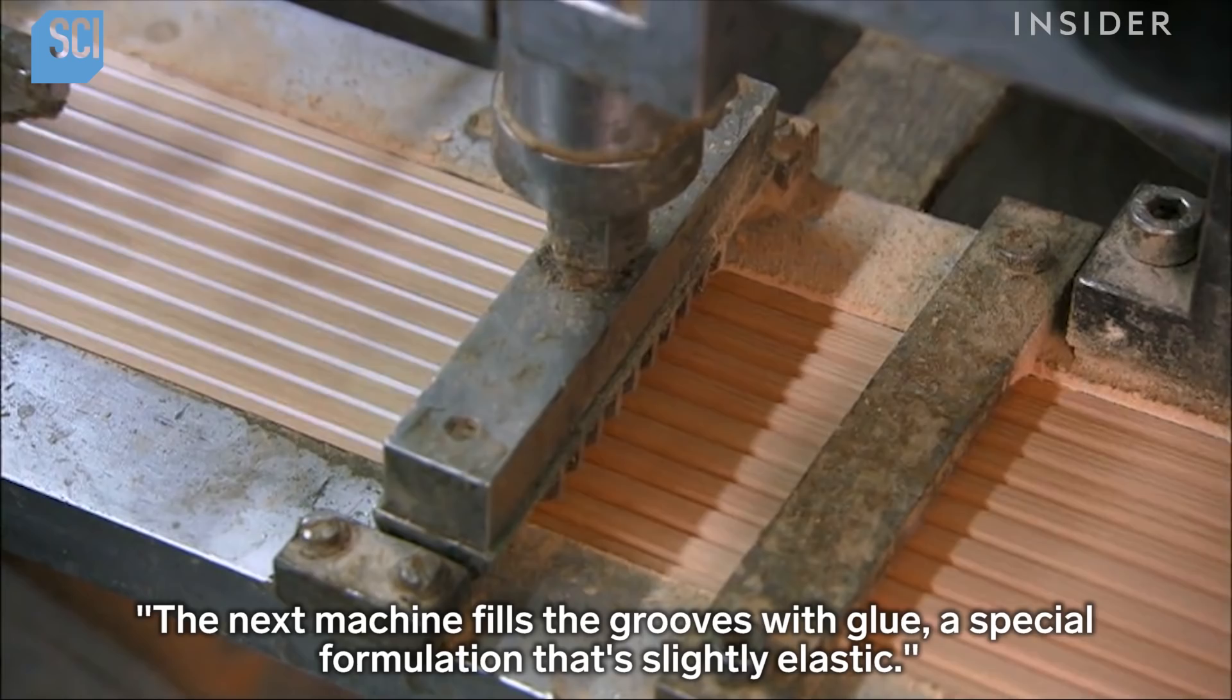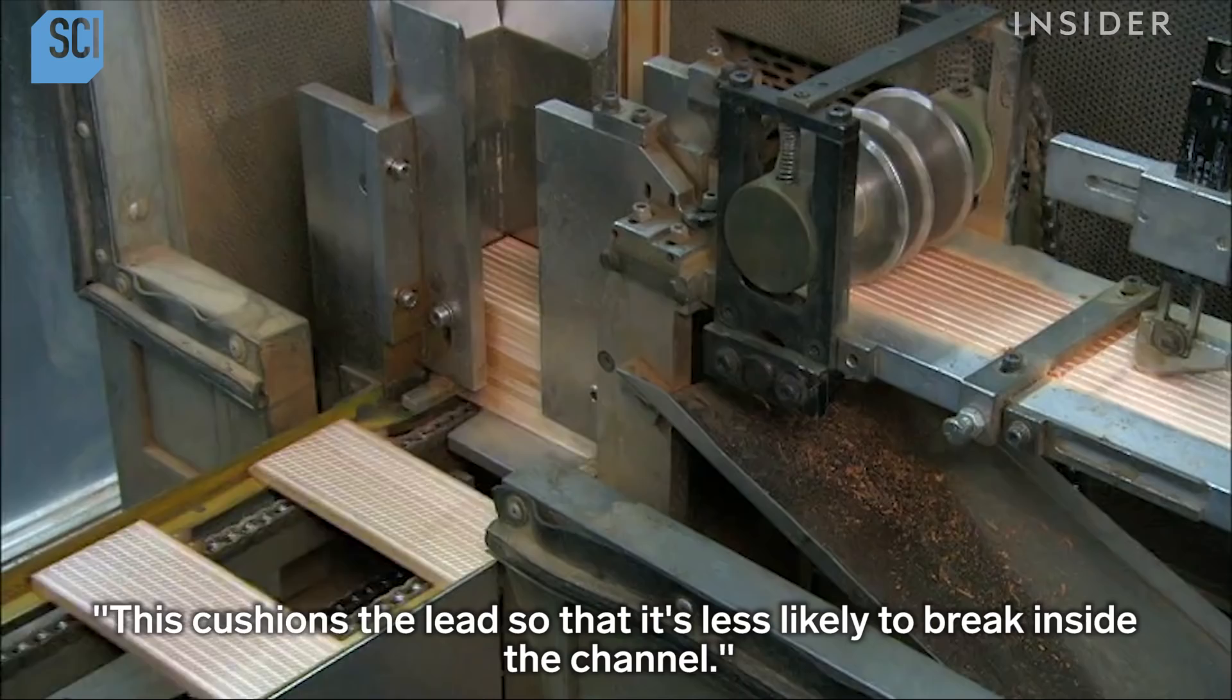The next machine fills the grooves with glue, a special formulation that's slightly elastic. This cushions the lead so that it's less likely to break inside the channel.